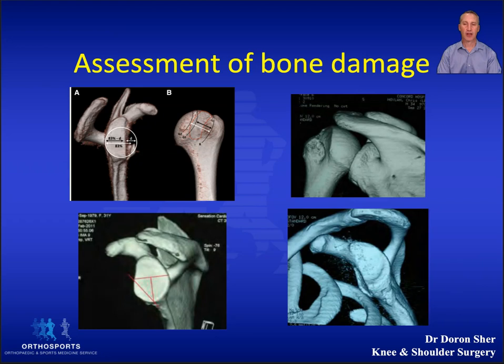A Bankart fracture or glenoid rim fracture is seen in nearly a third of first-time anterior shoulder dislocations if you look closely enough.